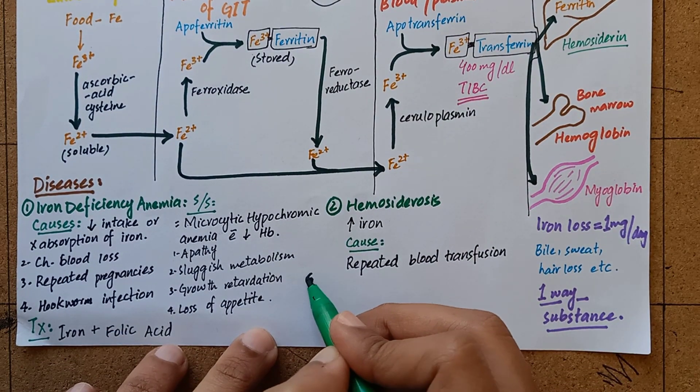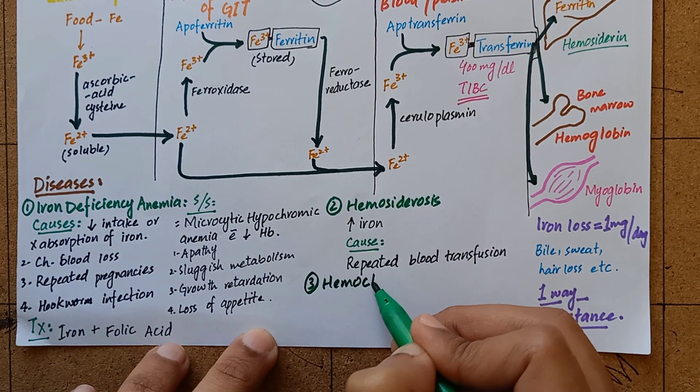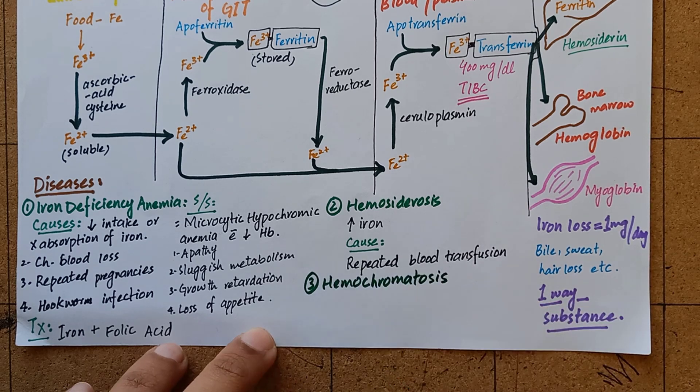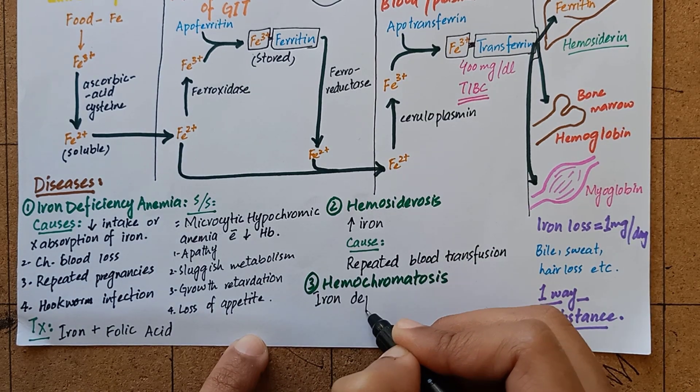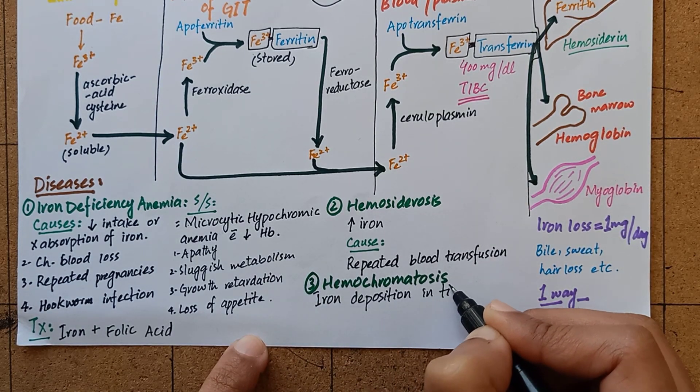Third is hemochromatosis. This is a rare disease in which iron is directly deposited in the tissues like liver, spleen, and pancreas.